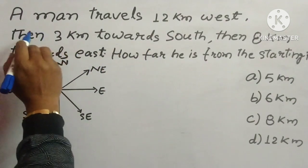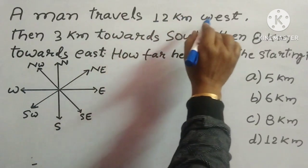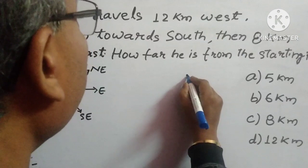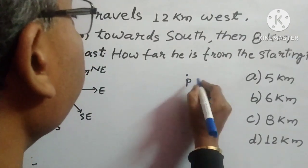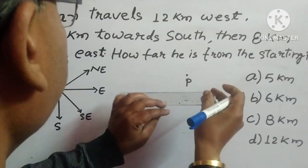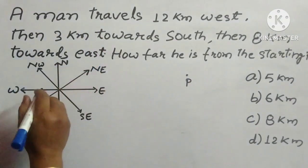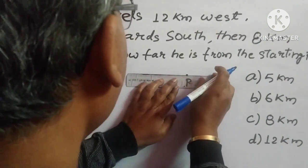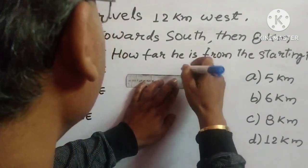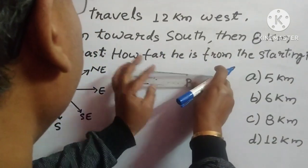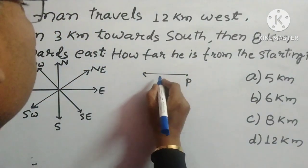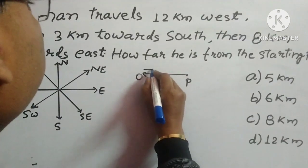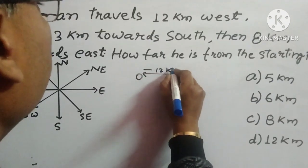Now see what the question says. A man travels 12 km West. Suppose the man starts from here and we will name it point P. So he travels 12 km West in this direction. So we will draw this, and name this one as point O. This distance is 12 km.